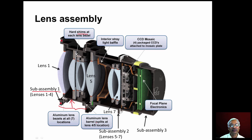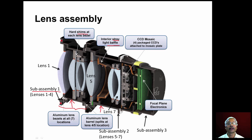Sub-assembly number two consists of three lenses: lens number five, six, and seven. These three lenses are assembled in another split barrel. In sub-assembly number two we have an interior stray light baffle which reduces stray light inside the barrel.